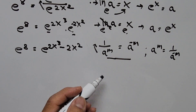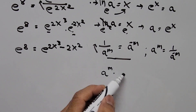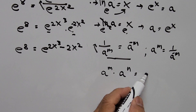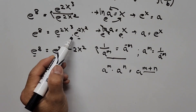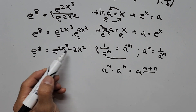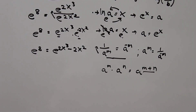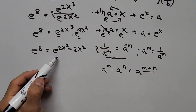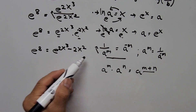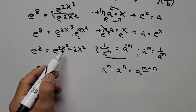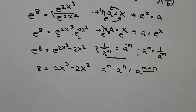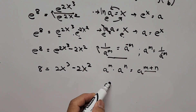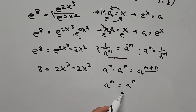Back to our equation — the left and right hand sides now have the same base e, so we can equate their exponents. This follows from the rule: if a to the m equals a to the n, then m equals n. So we now have 8 equals 2x cubed minus 2x squared.